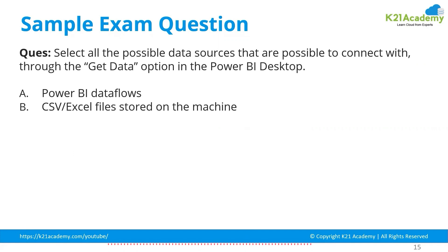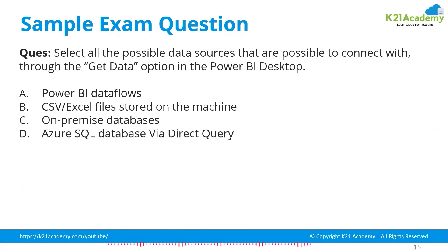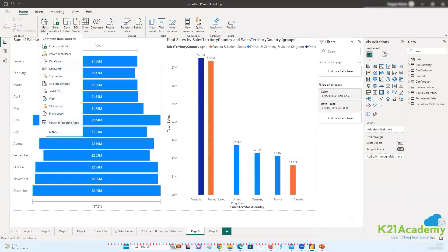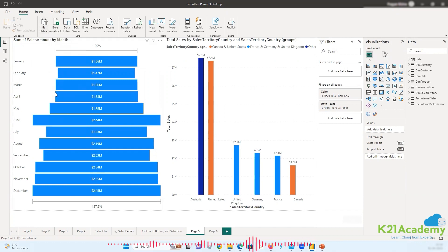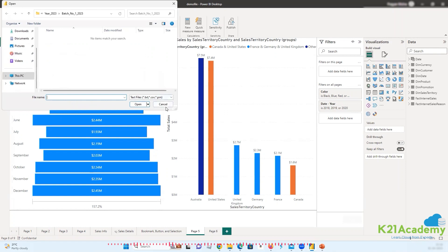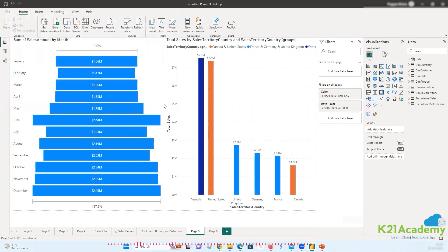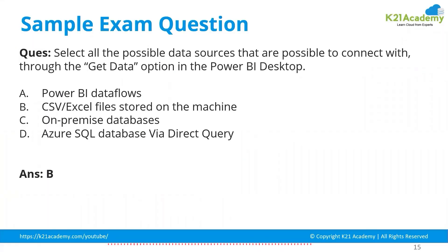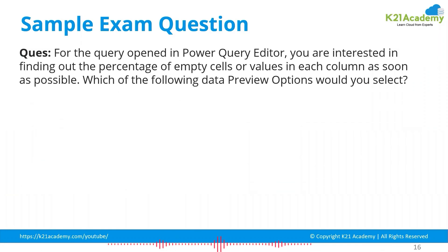The answer is B — Power BI Dataflows, CSV and Excel files, on-premises database, and Azure SQL data via Direct Query. When you go to Get Data in Power BI Desktop, CSV and Excel files are directly accessible. Options C and D can also be considered correct answers for this question. Moving to the second question: 'For a query opened in the Power Query Editor, you want to find the percentage of empty cells or values in each column as quickly as possible.'